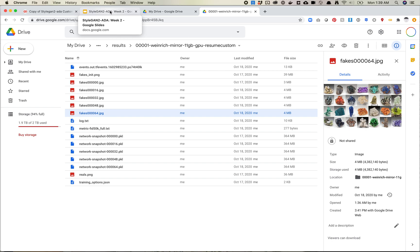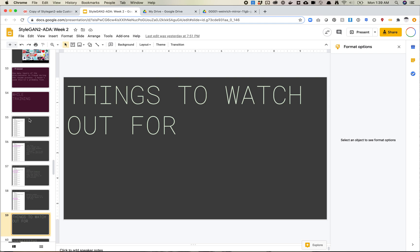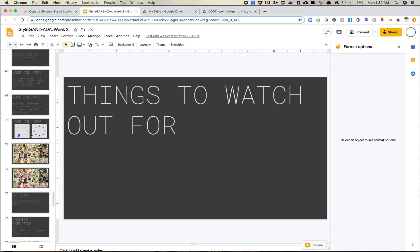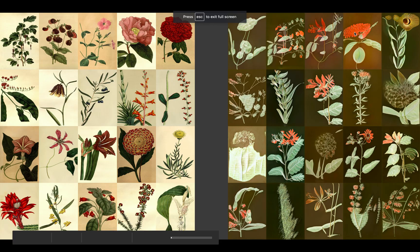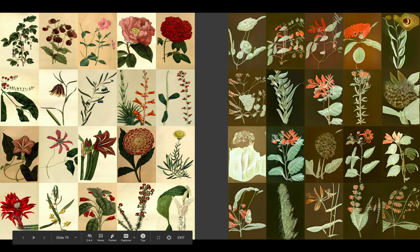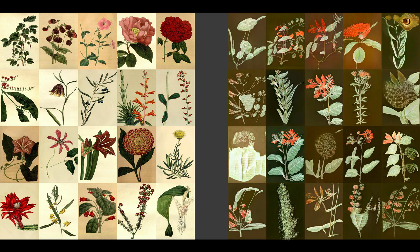I do have one big criticism: a lot of the StyleGAN2 ADA repo talks about leakage and the idea that their models don't leak. I have not found that to be the case. I found a lot of leakage, mostly around the color augmentations. So let me show you some examples here. These are examples of some trainings I've done — on the left are the reals and on the right are my fakes. Clearly this is leaking, using either LumaFlip or some other configuration. I ran this for probably about 400k images to see if it would train out and it did not. There are issues where it gets stuck in a local minima or just picks up that leakage from the augmentations and runs with it.